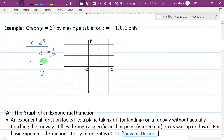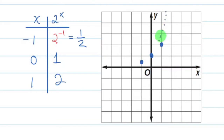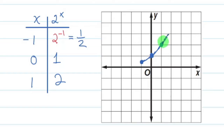Now that we have all three points, we can graph them. Negative 1 comma one half is half a box up from negative 1. Zero comma 1 is right there. And 1 comma 2 is there. This is a curve, not a line. The right side of this curve is basically half a parabola, so start at the first point and draw it nice and round like a parabola, then put an arrow when you reach the edge of your graph.